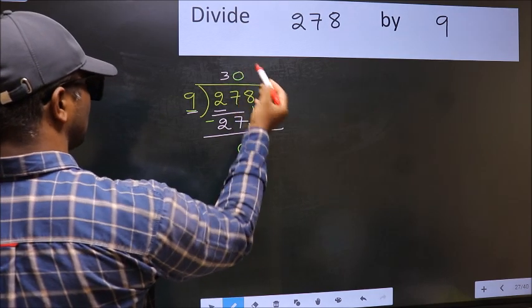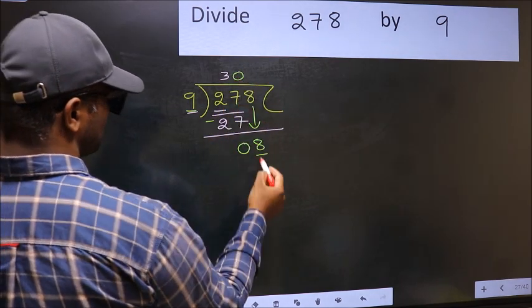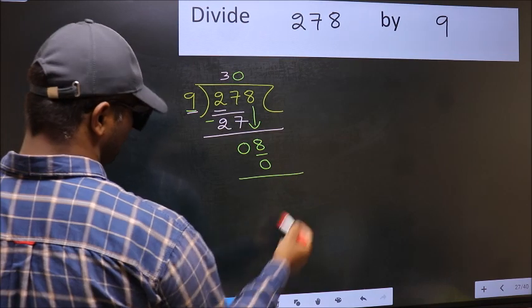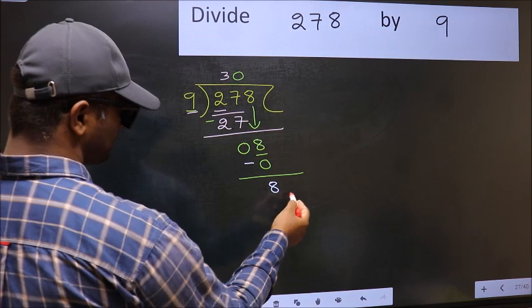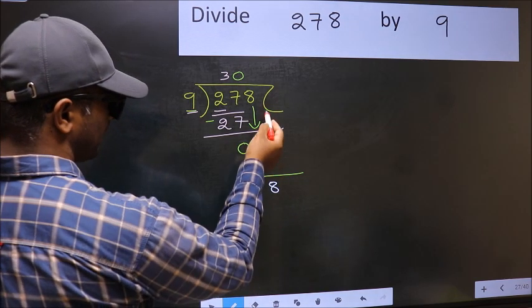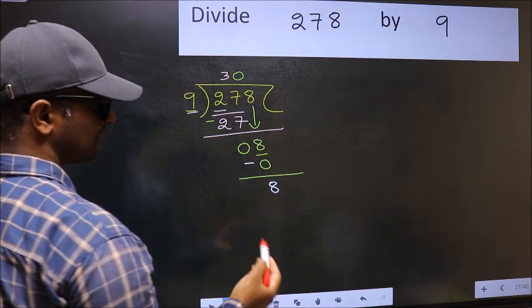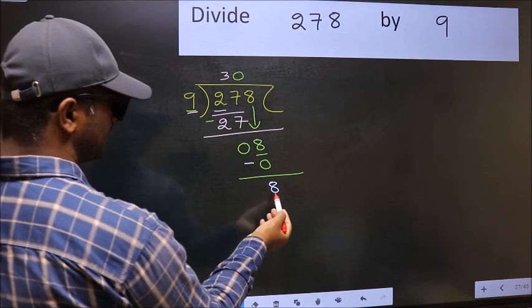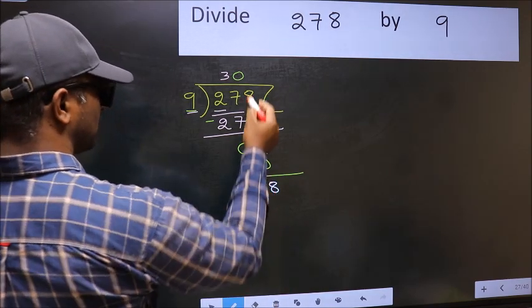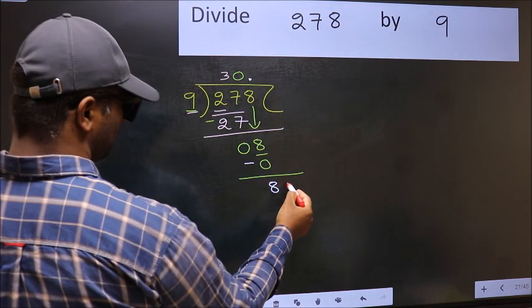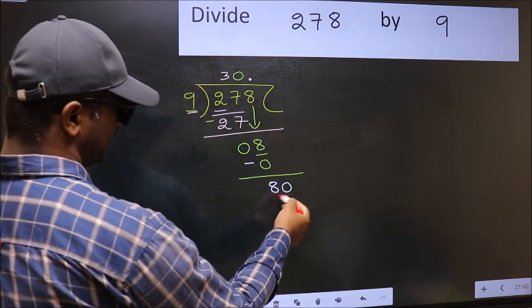We should take 0. So 9 into 0, 0. Now you should subtract. 8 minus 0, 8. Over here, we did not bring any number down, and 8 is smaller than 9. So now you can put dot and take 0. So 80.